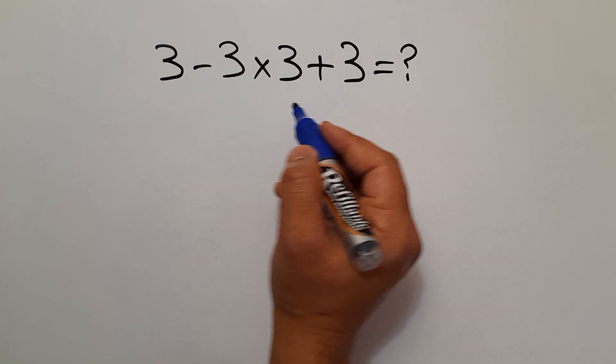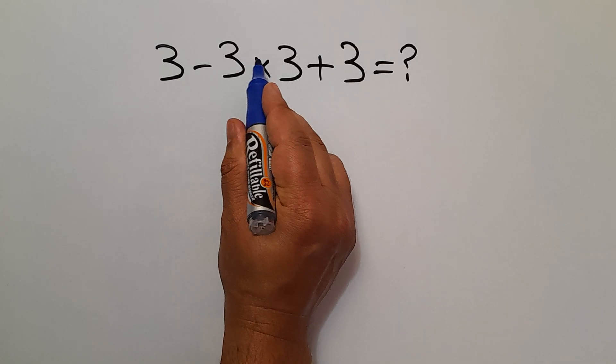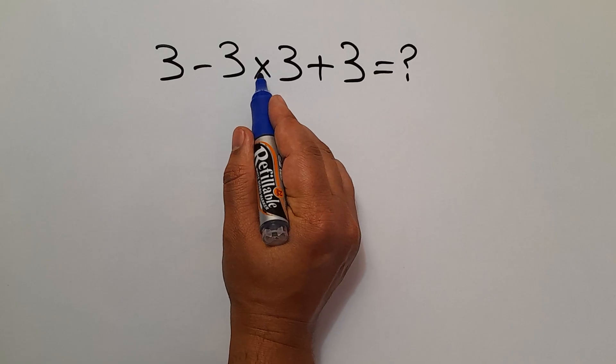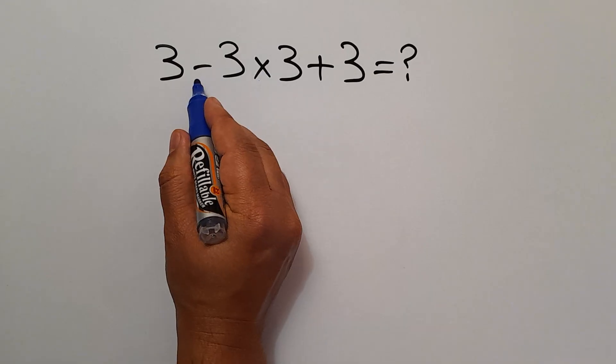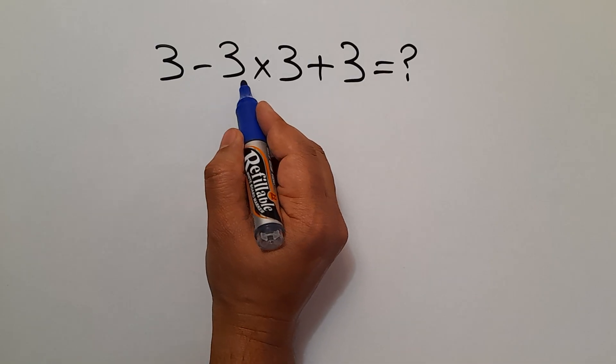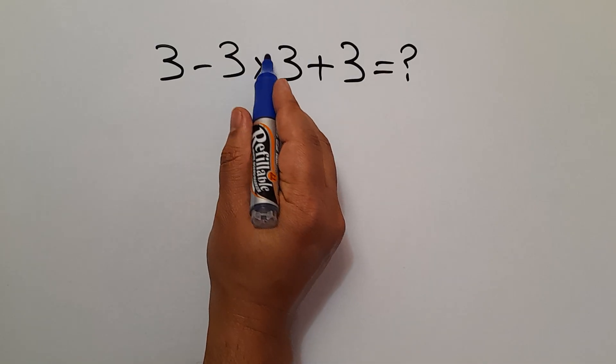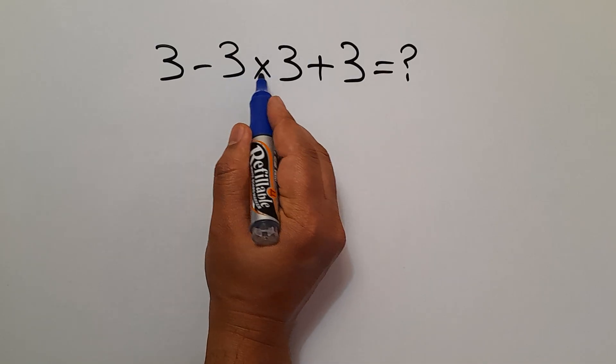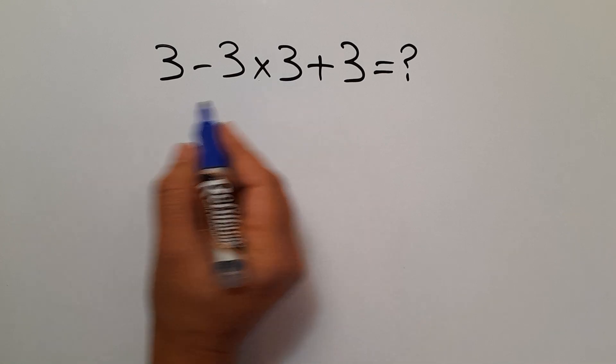According to the order of operations, multiplication has higher priority than subtraction and addition. So first we have to handle this multiplication. 3 times 3 gives us 9.